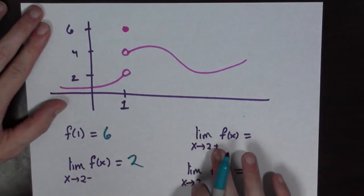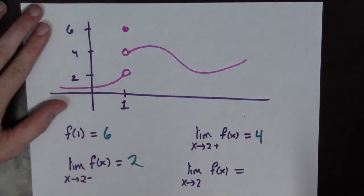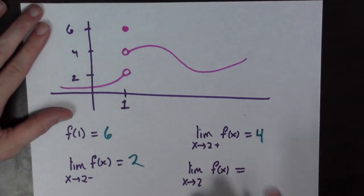Now let's see, what's the limit of f of x as x goes to 2 from the right, coming from the right? Aha! It looks like it's 4. And what's the limit? Well again, the limit as x goes to 2 of f of x, this does not exist.